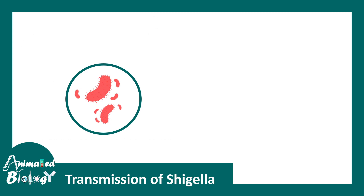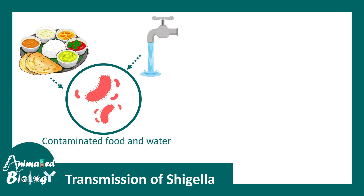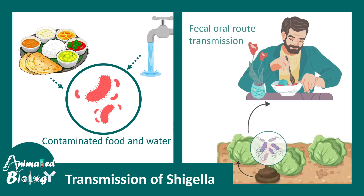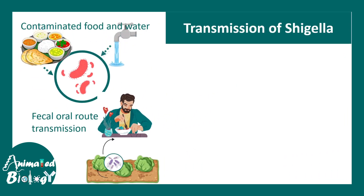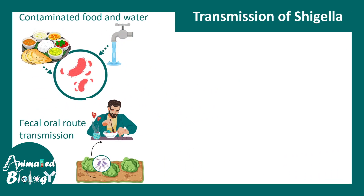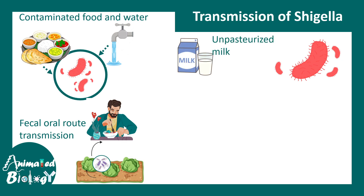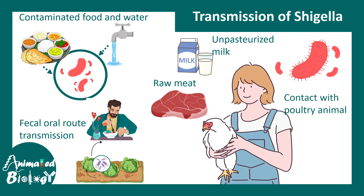Shigella is transmitted through contaminated food or water via the fecal-oral route. Apart from these routes, it can also be transmitted via unpasteurized milk, raw meat that is not properly washed, or contact with poultry animals infected with the bacteria.